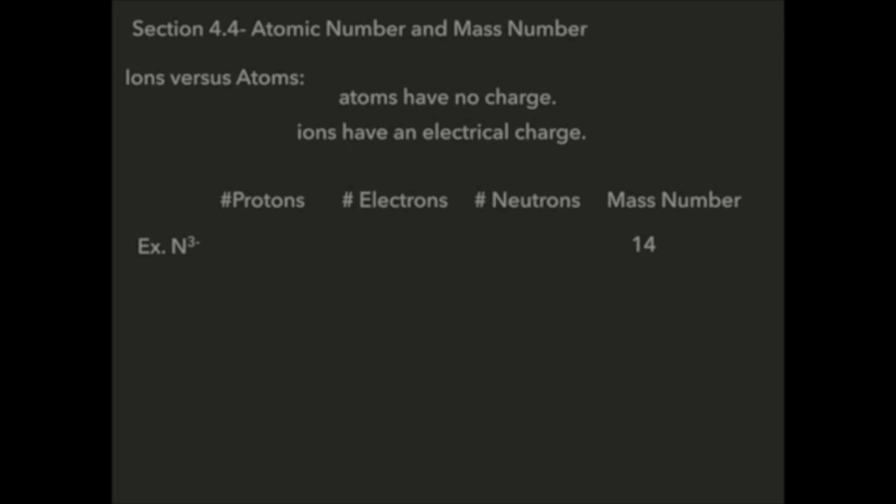So if I have nitrogen, if I look at the periodic table the number of protons it has is 7. That's given, you can use your periodic table to figure that out.